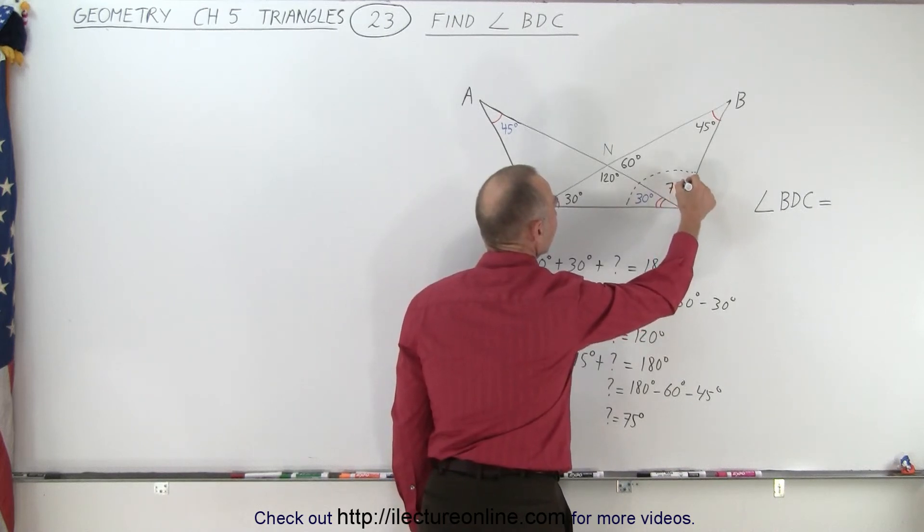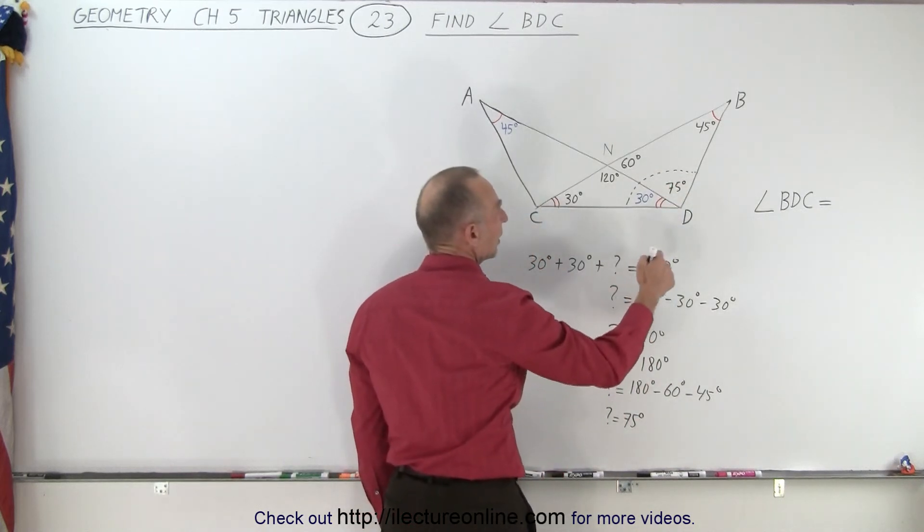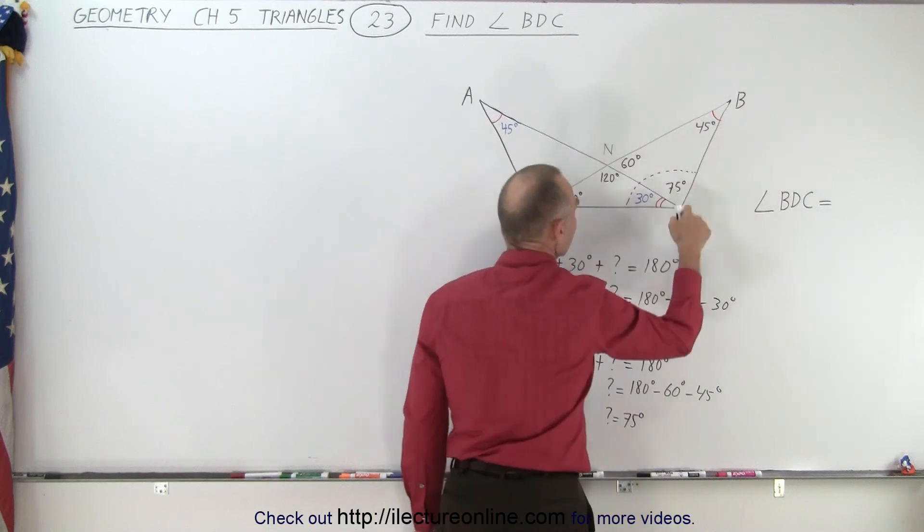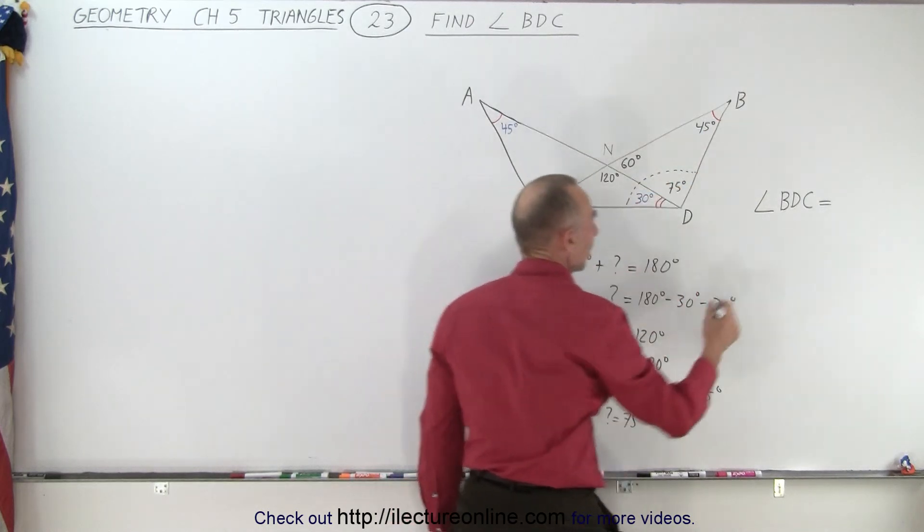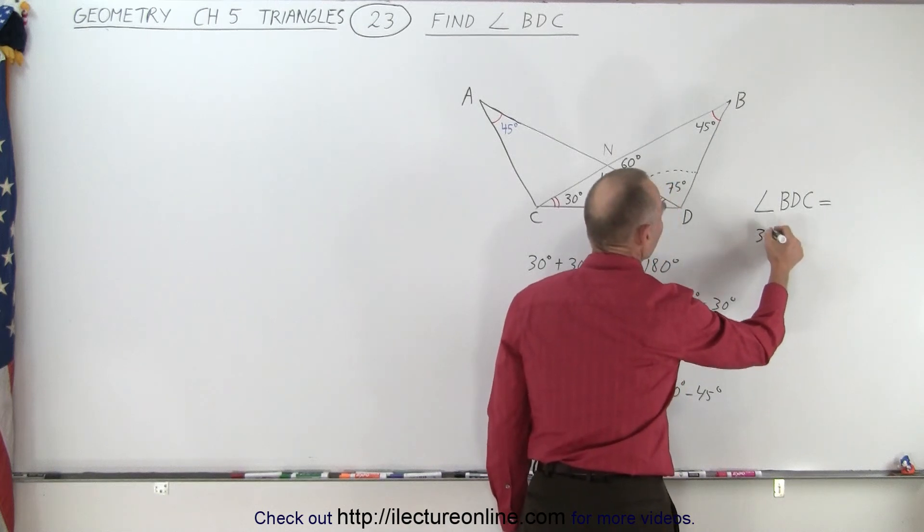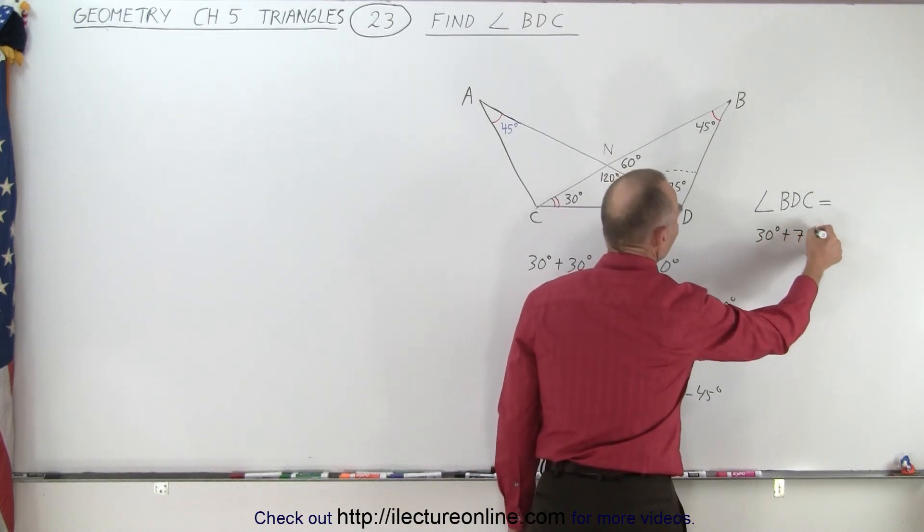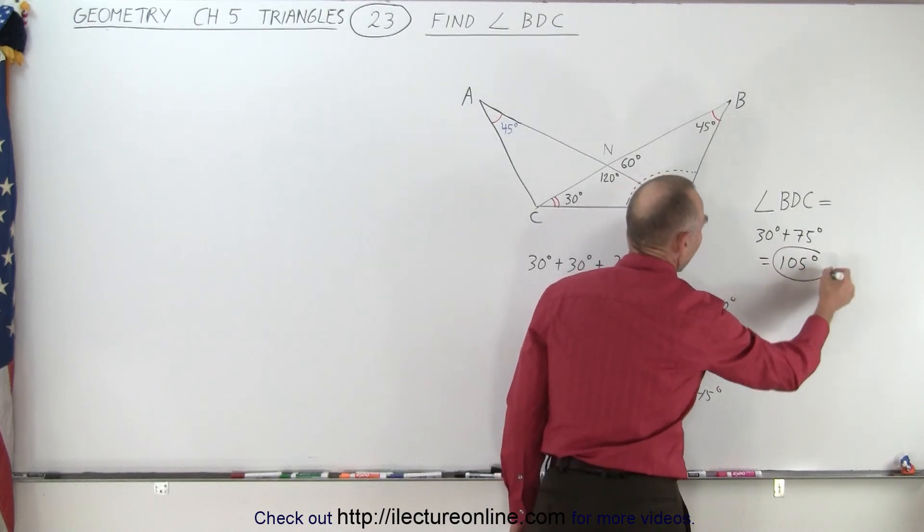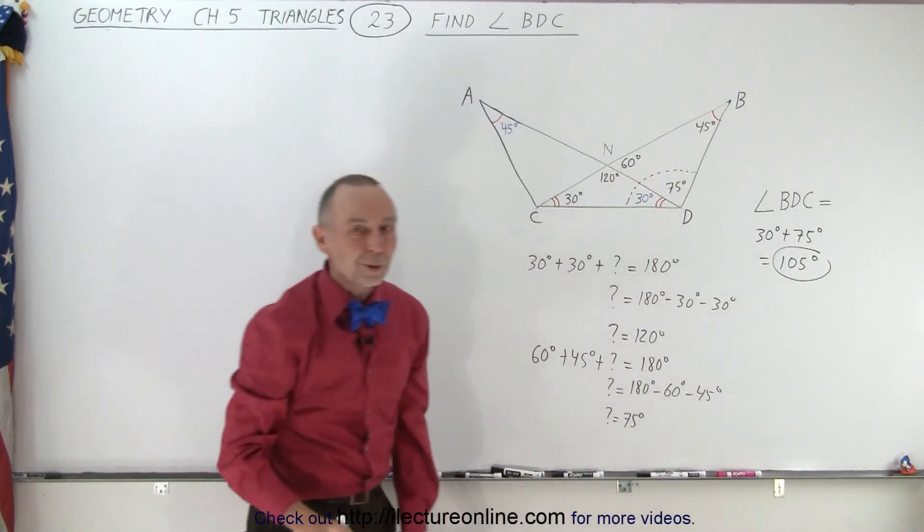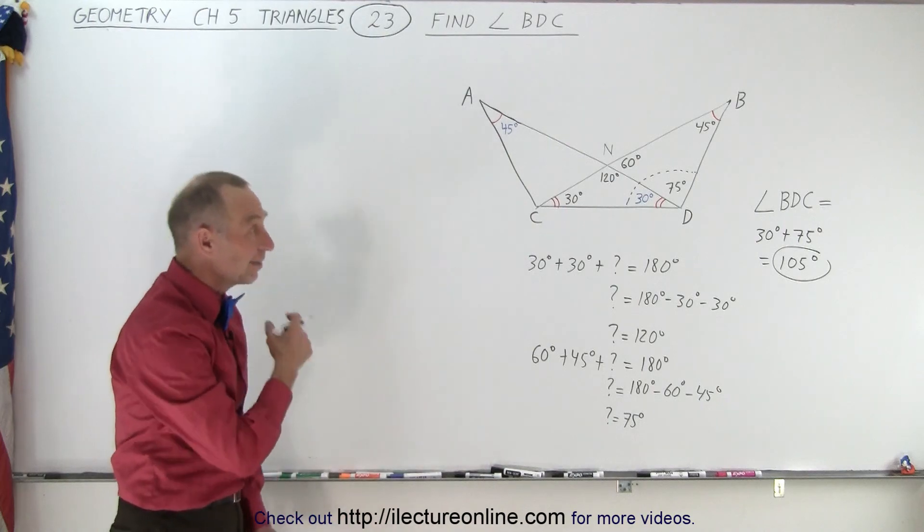Now I can see that the angle from B to D to C, this angle right here is the sum of those two. So that means that this is equal to 30 degrees plus 75 degrees which is 105 degrees. And that is the angle we were looking for. And that is how it's done.